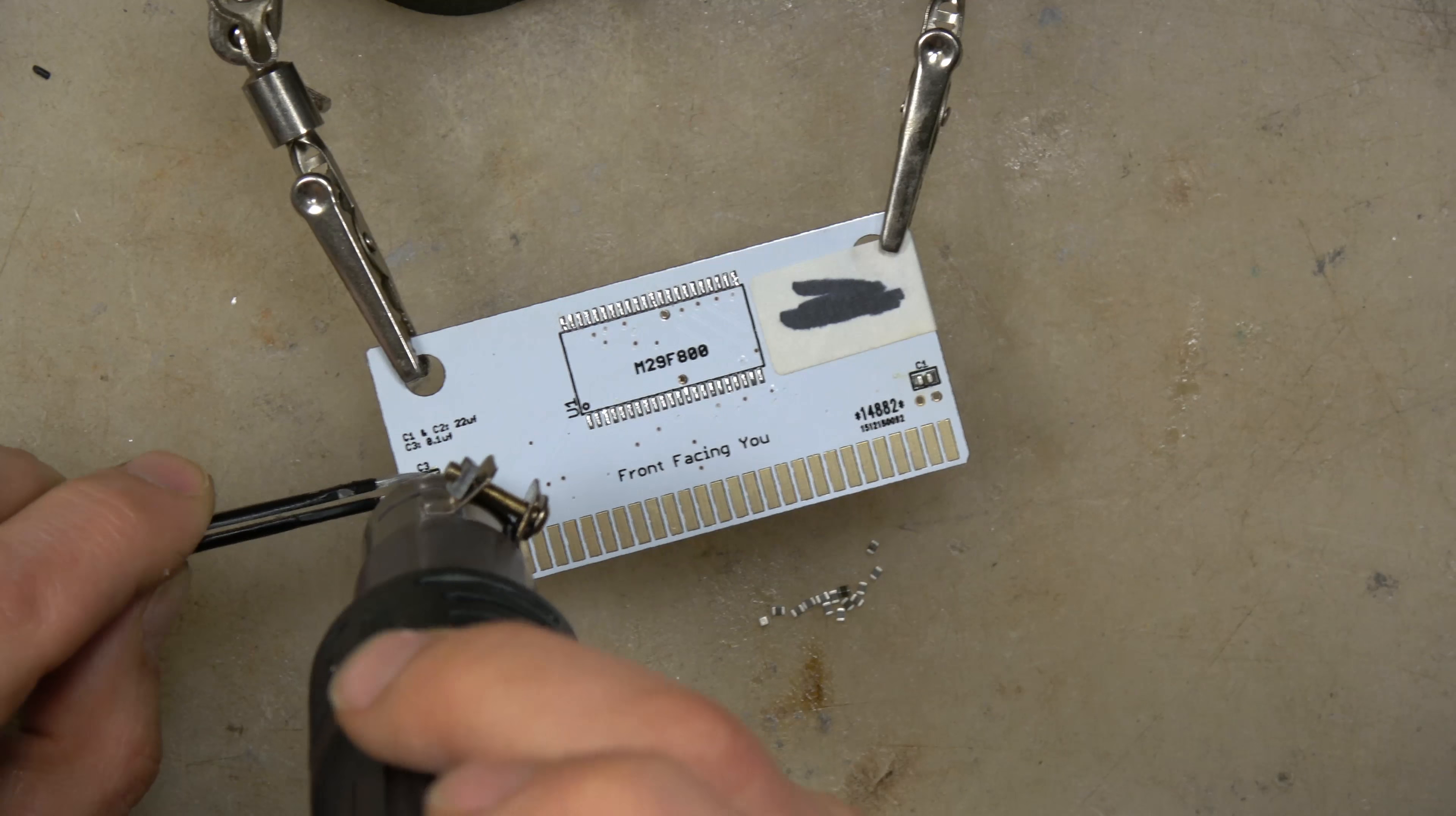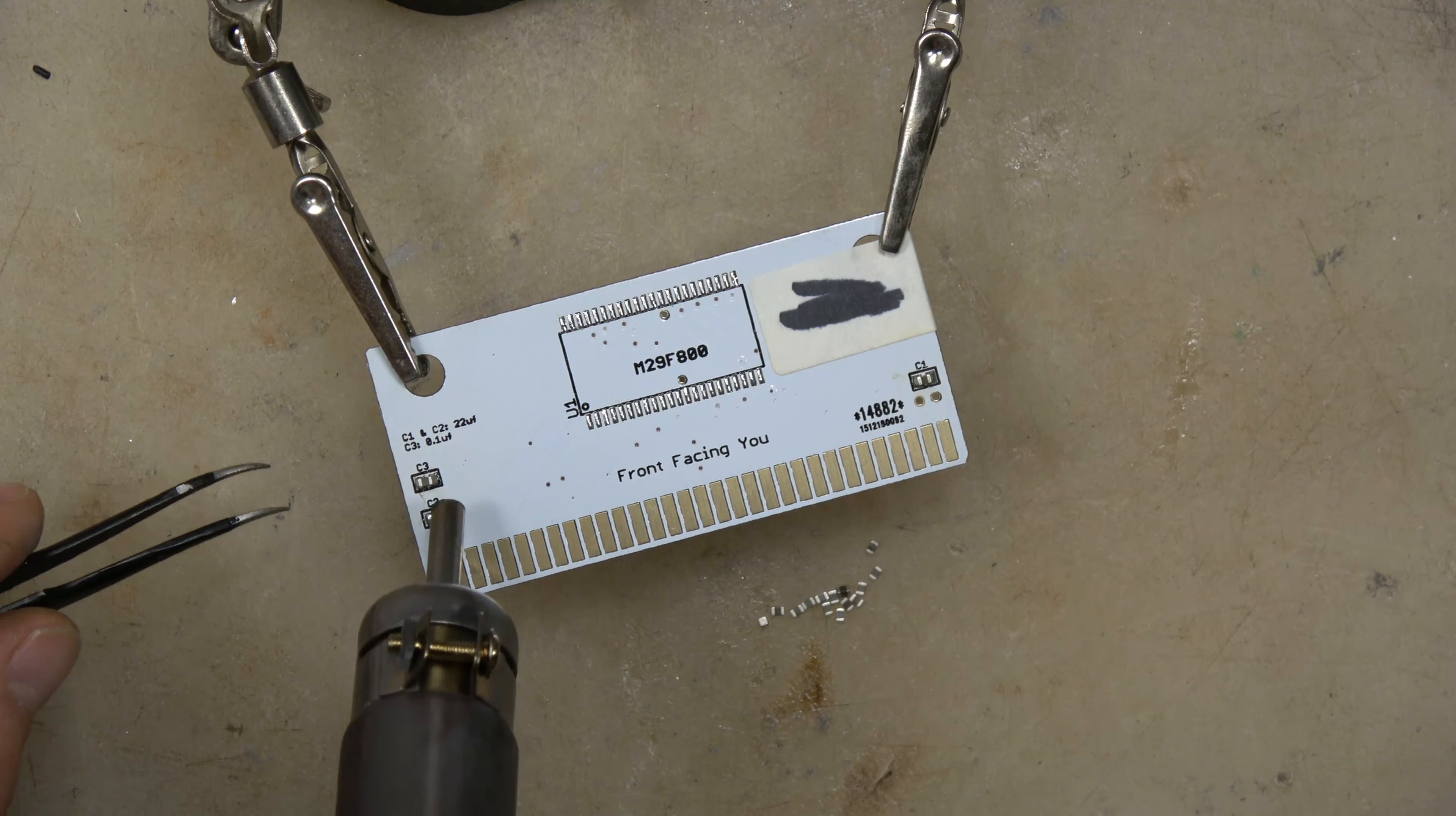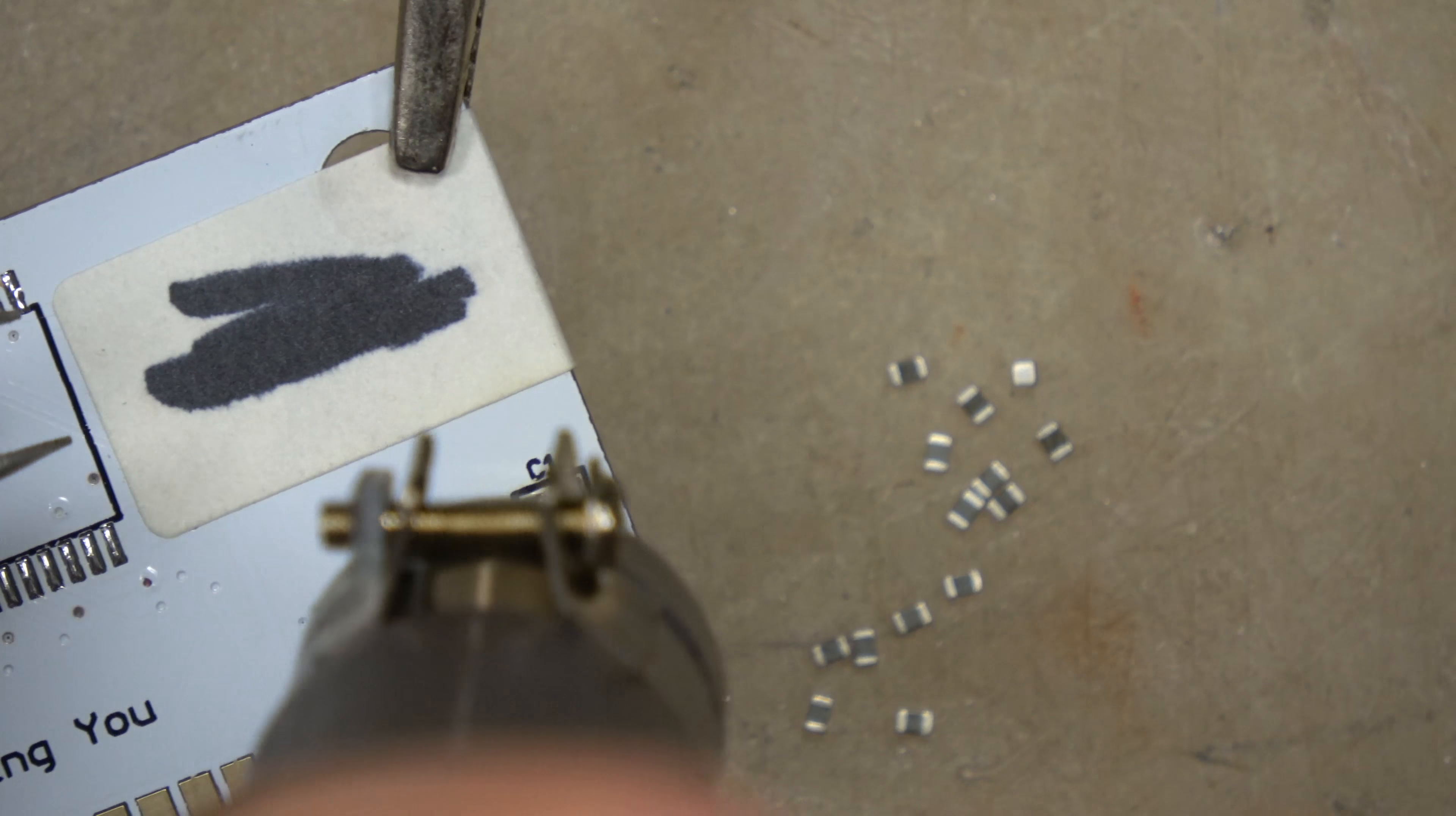For the capacitors we're just going to take our hot air solder gun and tweezers, pick up the capacitor, heat up the solder a little bit, put the capacitor right on top of the solder, and when you notice the solder is fully melted then you just drop the capacitor in place. This takes a little bit of practice and technique.